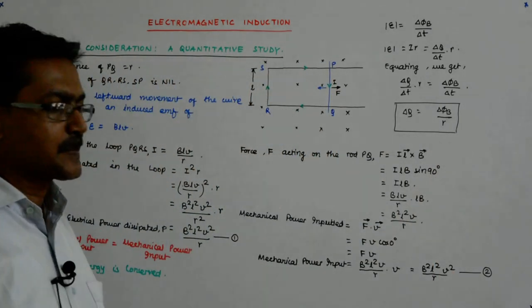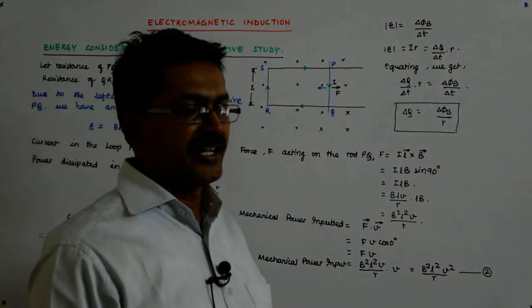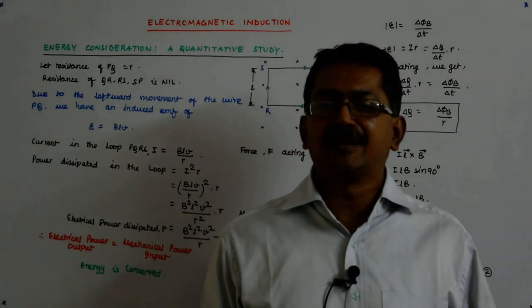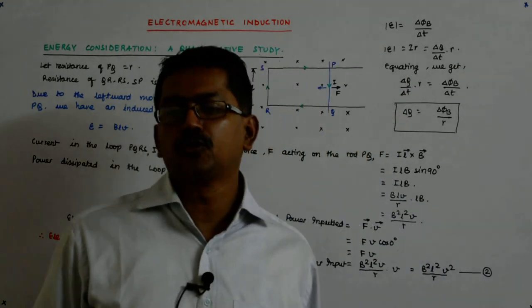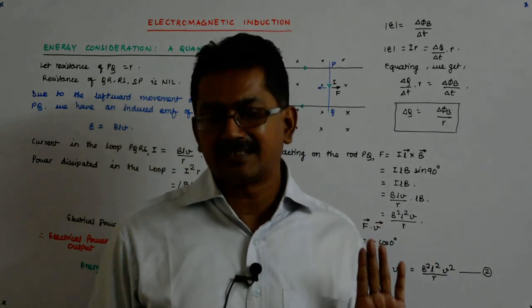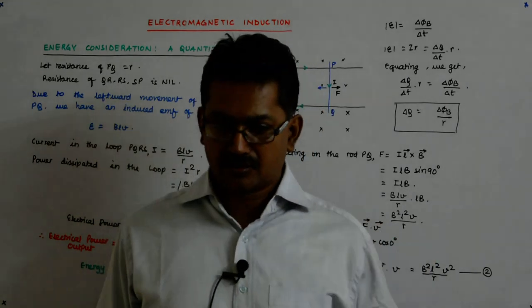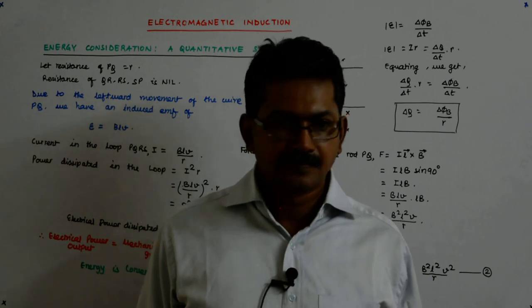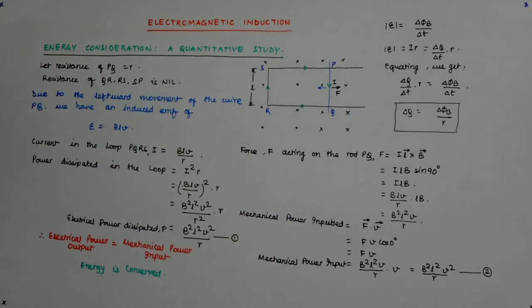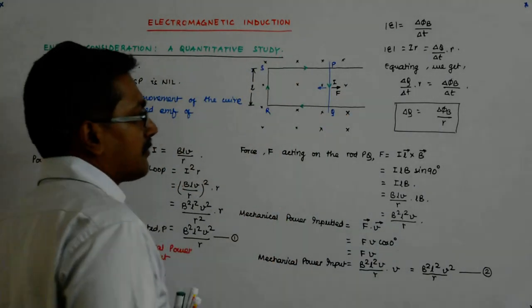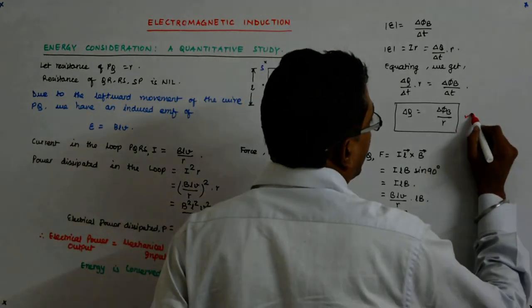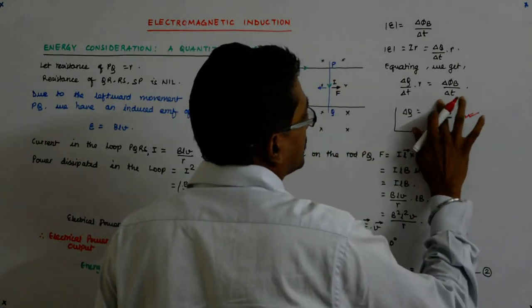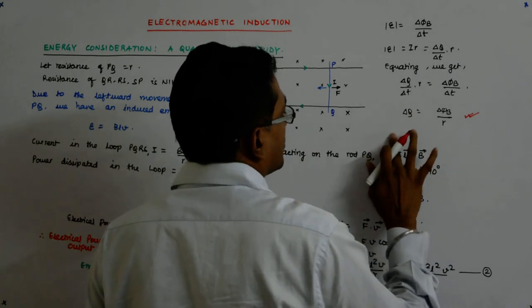The change in magnetic flux divided by the resistance gives you the change in charge. That is the amount of charge that is passed or given cross section. Hold this in mind. It might come handy while solving a problem or two.